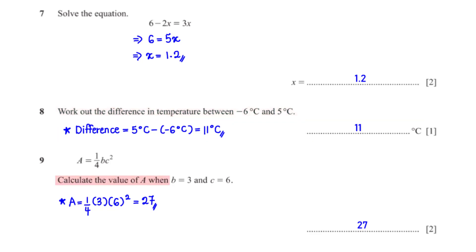Calculate the value of a when b is 3 and c is 6. When we plug in b equals 3 and c equals 6 into the equation, this gives us a equals 27.